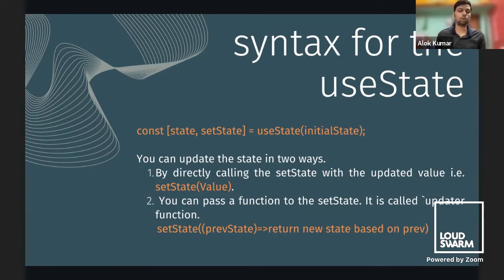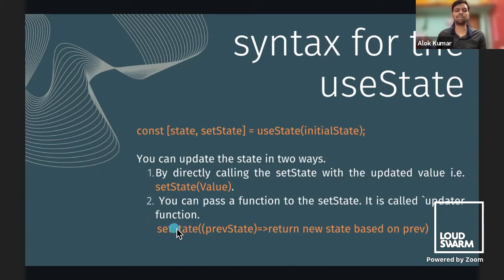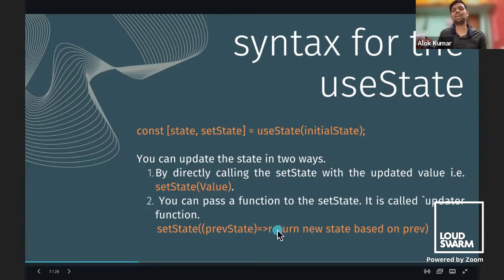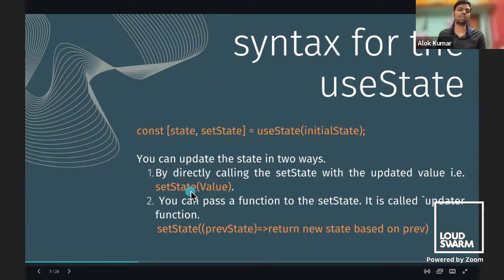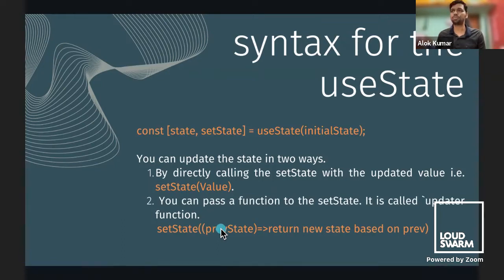You can update the state in two ways. First, by directly calling the setter with the updated value — just replace its value. Second, you can pass a function to the setter, called the updater function. The updater function receives the previous state as an argument and returns a new state based on it. This is the most underrated but most important pattern. If you have an object or array in your state, I recommend using the updater function — it provides more flexibility.